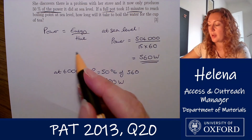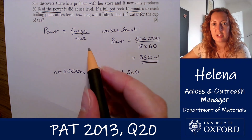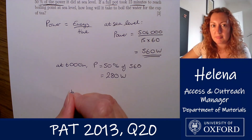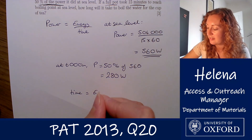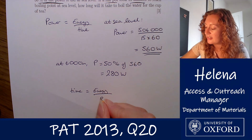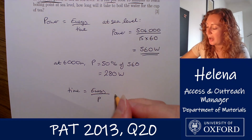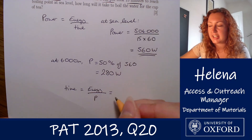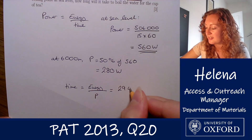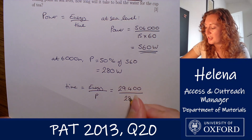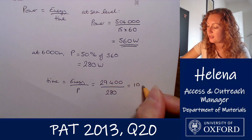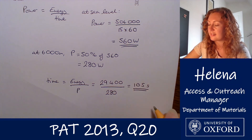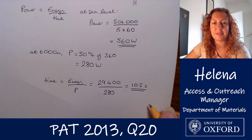Remembering that power is energy per unit time, we can rearrange to find the time it takes to boil this mug of water: time equals energy divided by power. The energy required is 29,400 joules, divided by the new power of 280 watts. That gives us a time of 105 seconds — 1 minute and 45 seconds to boil enough water to make a cup of tea while climbing Mount Everest.